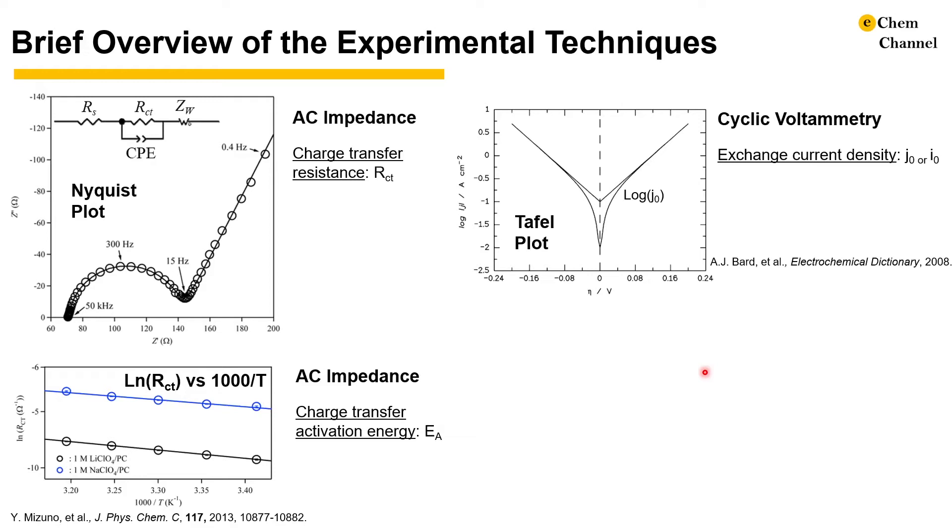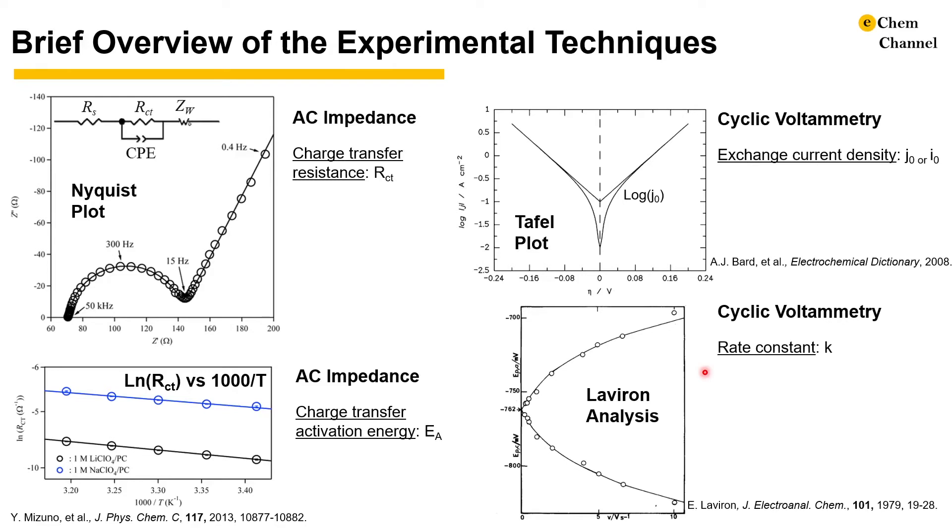In electrocatalysis and corrosion science, linear sweep voltammetry and cyclic voltammetry is used to create the Tafel plot and determine the exchange current density. For diffusionless electrochemical systems, Laveron proposed that rate constant can be determined from the variation of peak potentials as a function of sweep rate. Each parameter here can be used to describe charge transfer processes and the choice depends on the field of study.